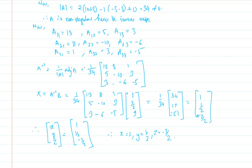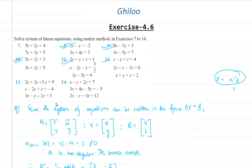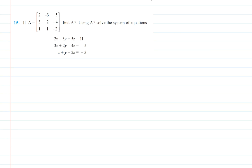So we did question number 11. Questions 12, 13, and 14 are just follow-ups of the same type. Question 15 is once again the same but with the pattern reversed — you are given the matrix A and need to find A inverse, then use it to solve the system. Since the coefficient matrix is already given, it is actually easier than questions 11 through 14. Now we come to the last question of this exercise, question number 16, which is a word problem.